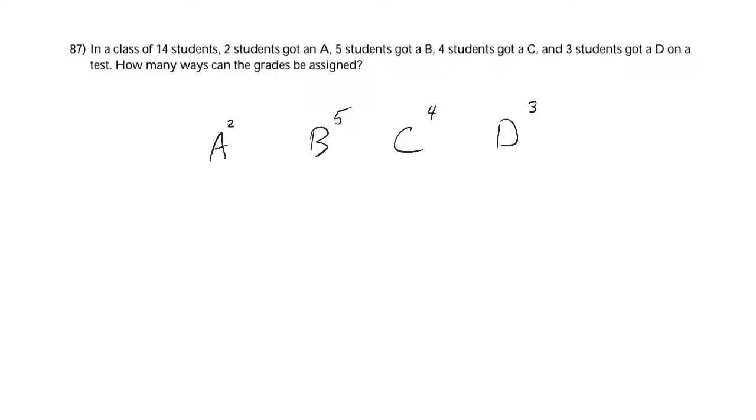And I want to know how many ways the grades can be assigned. It's sort of a funny question. Maybe we've assigned them already. At any rate, so two people got an A, and it doesn't matter what order they came in, they got an A. But I want to know how many ways that could happen.